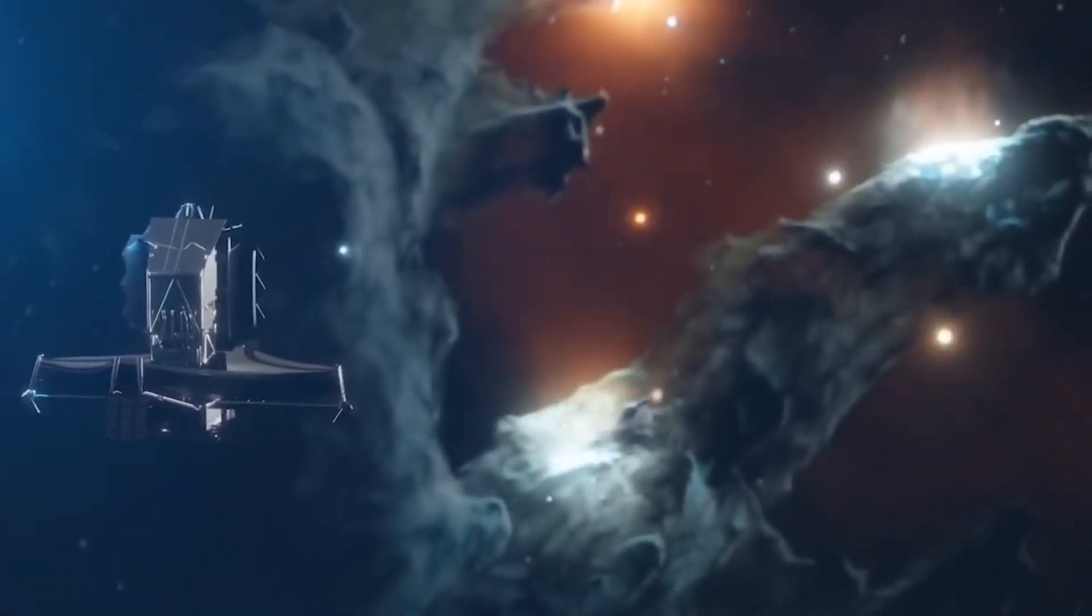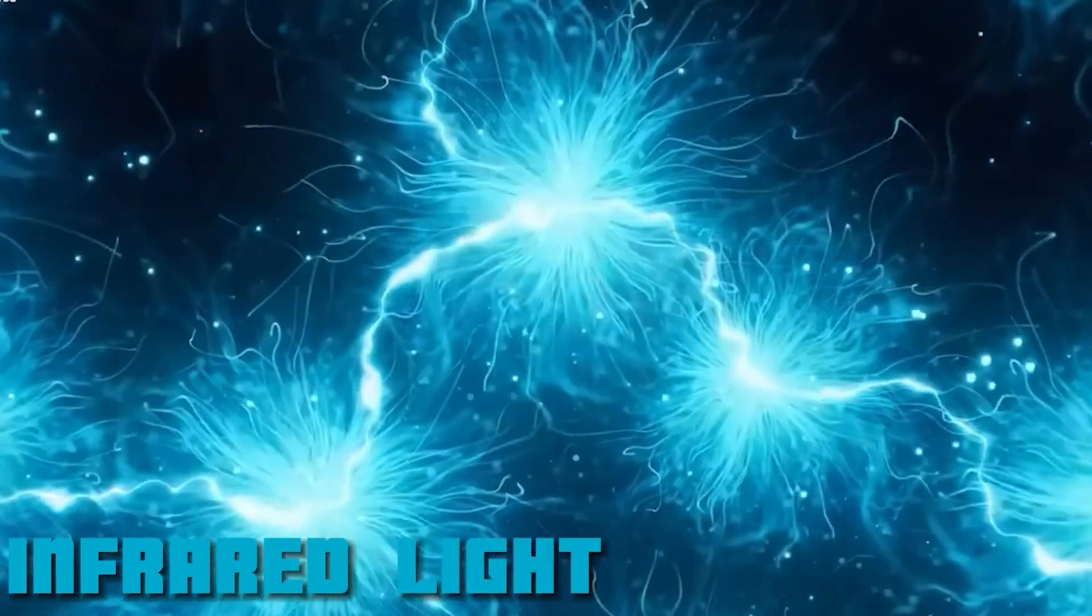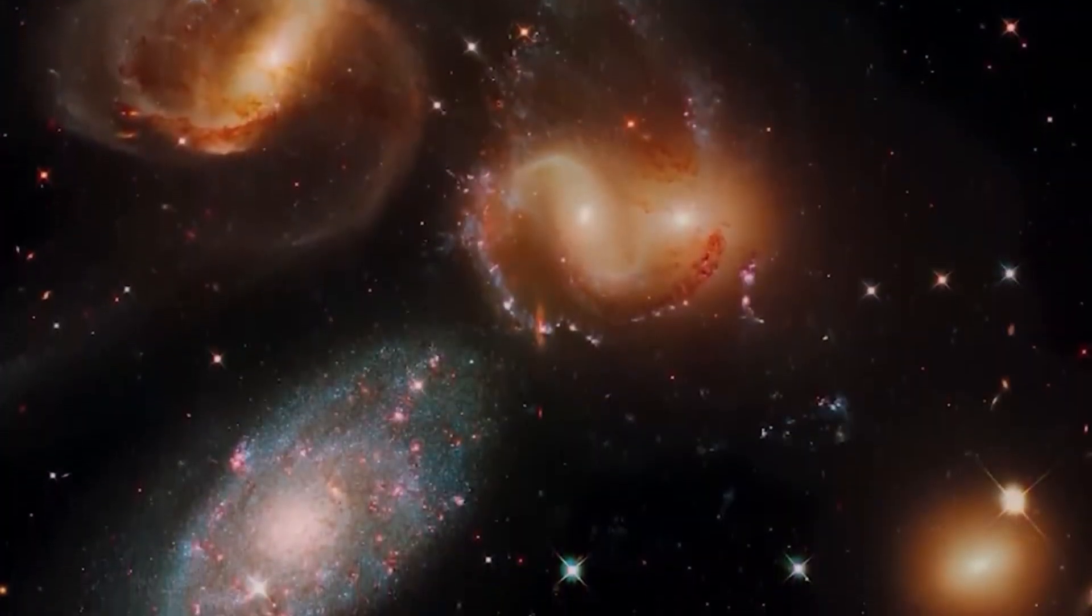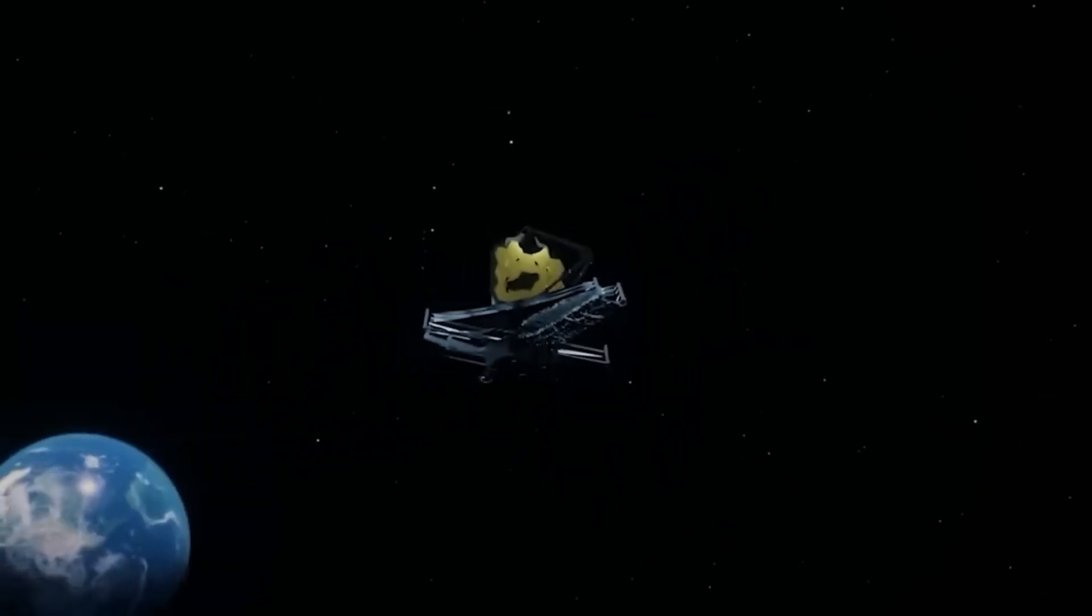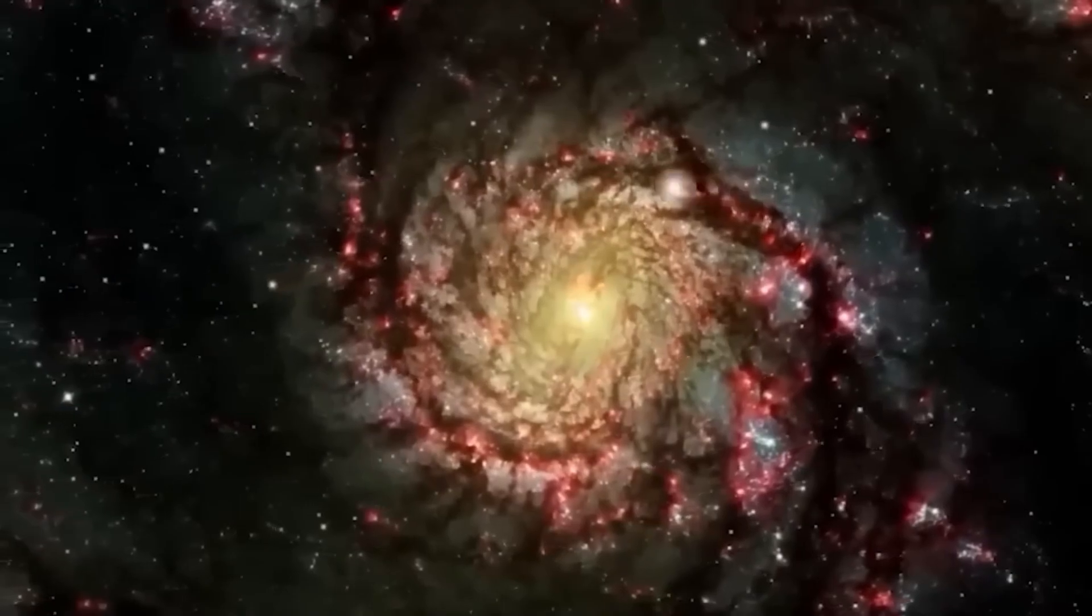The James Webb Space Telescope is a powerful tool that observes the universe using infrared light. This allows it to peek at ancient galaxies from billions of years ago. Its goal is to understand the origins and evolution of galaxies, including ones like Andromeda.